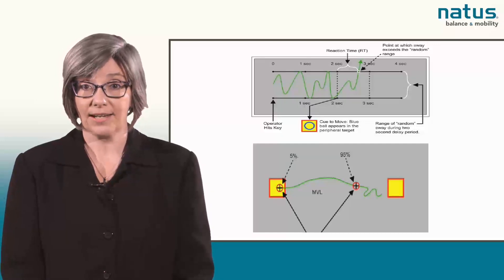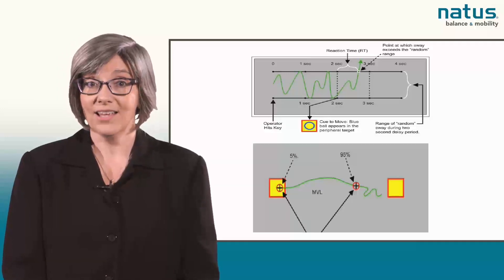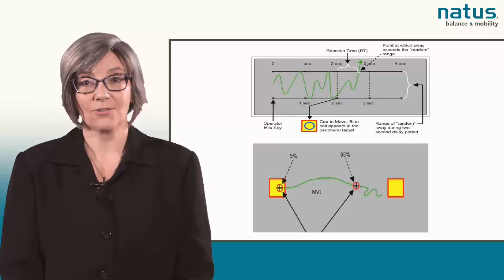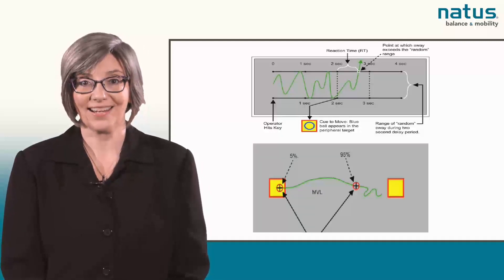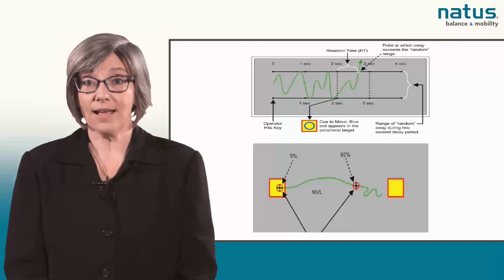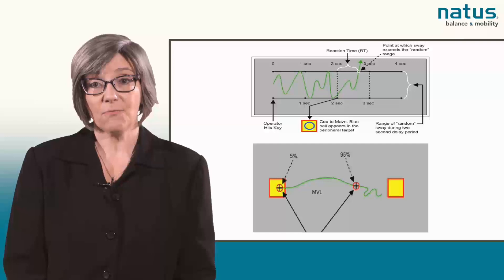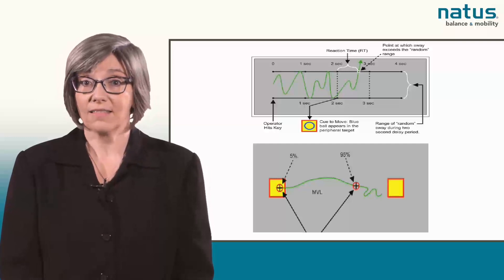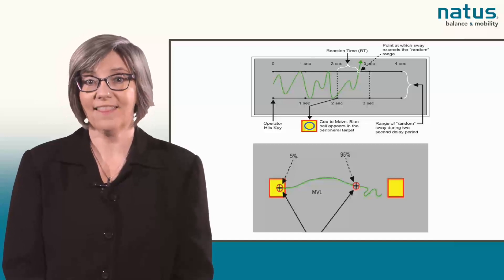Presented in degrees per second, the movement velocity value, MVL, provides information regarding the average speed of the center of gravity movement to the target in degrees per second. The MVL quantifies 5 to 95% of the distance from the center to the target, thus excluding the acceleration and deceleration components in the calculation.